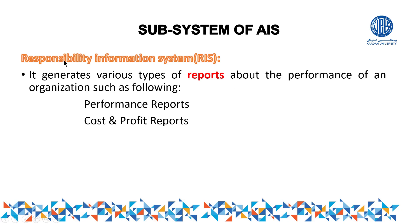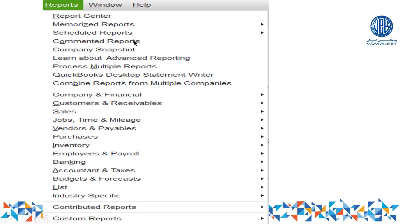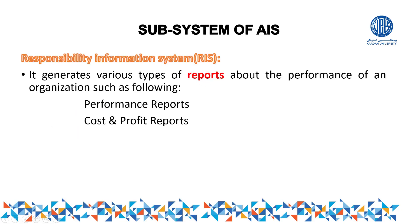The second part of AIS is RIS — Responsibility Information System. The responsibility of this part is to generate and provide reports. The first section records and processes; the second section provides reports. In QuickBooks, for example, there are reports for customers, vendors, purchases, inventory, employees, banking, and tax — all of which are the responsibility of RIS.